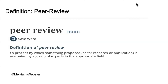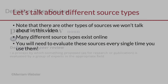Let's begin with the definition of peer-reviewed. Peer-reviewed is a process by which something proposed for research or publication is evaluated by a group of experts in the appropriate field.